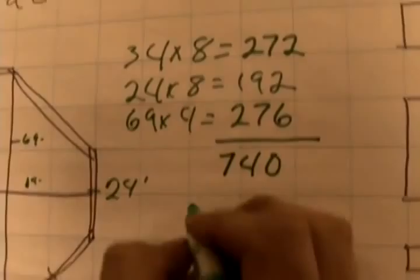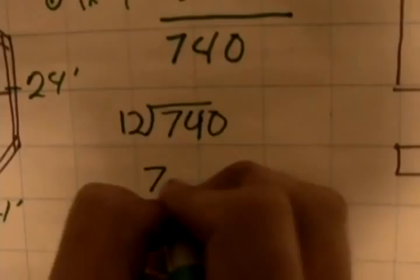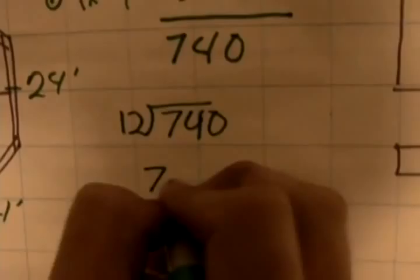That's seven hundred and forty inches. We'll take that seven forty and divide by twelve. We end up with seven point seven, so pretty much eight. That tells us we need eight lengths of two-by-fours.